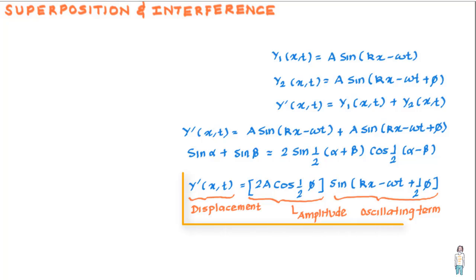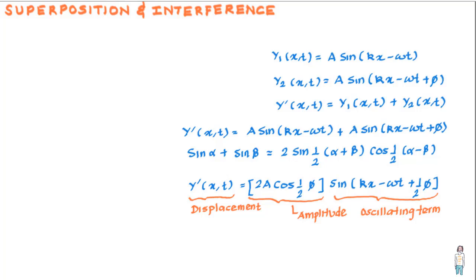The resultant wave has 2a cos(φ/2) as its amplitude and sin(kx − ωt + φ/2) as the oscillating term. It is a sinusoidal wave moving in the positive x-direction — in fact, this is the only wave you would actually see on the string; you would not get to see the two interfering waves separately.